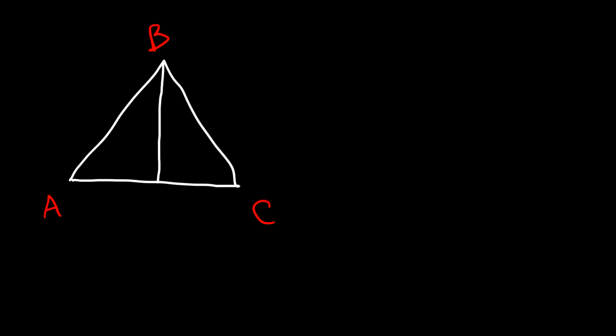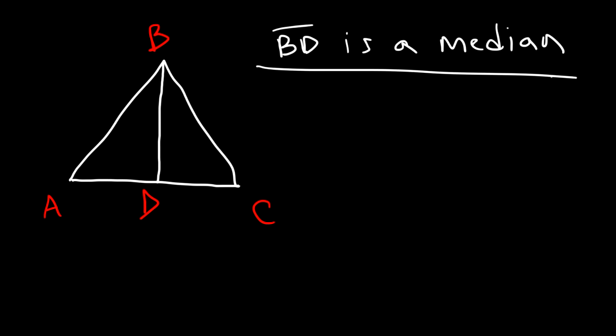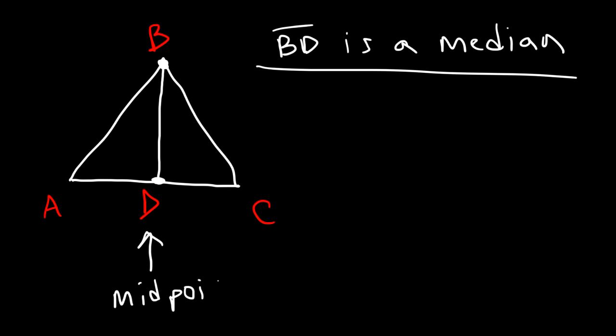Consider triangle ABC. Let's say that BD is a median. If BD is a median, what conclusions can we draw? We need to know what a median is. A median is a line segment that extends from the vertex of one side of the triangle — so vertex B — to the midpoint of the other side. So D is the midpoint of segment AC.